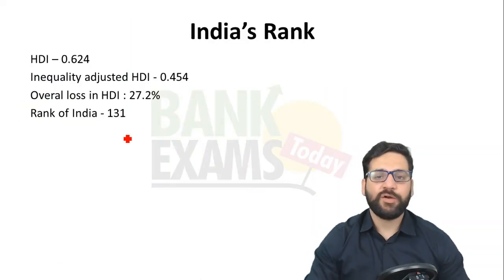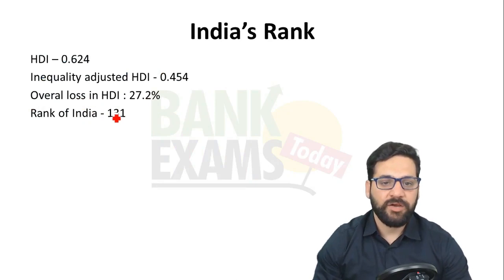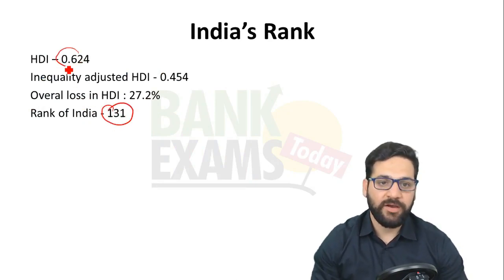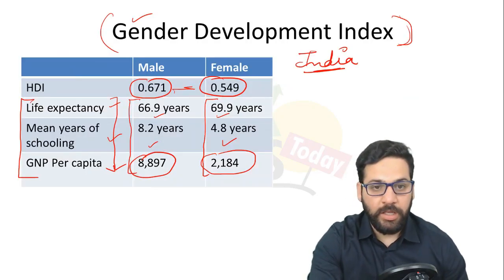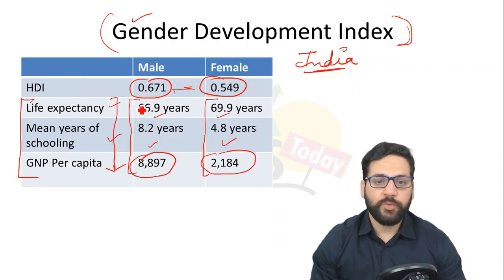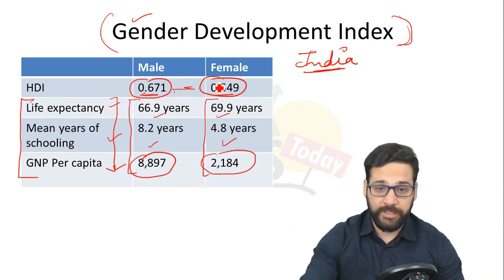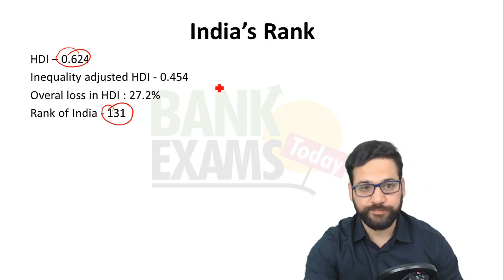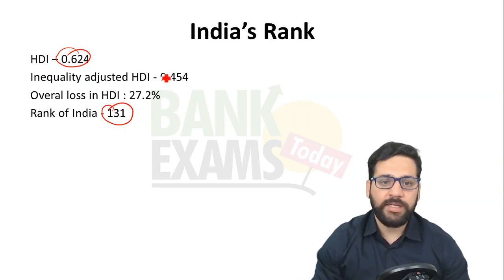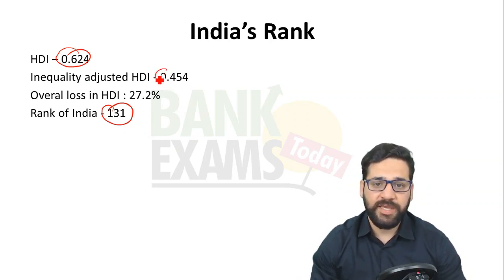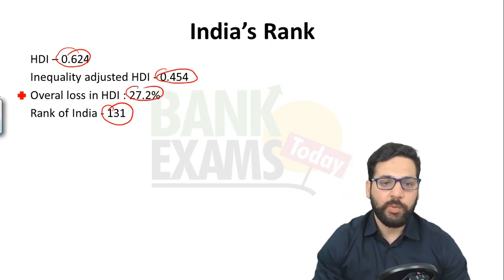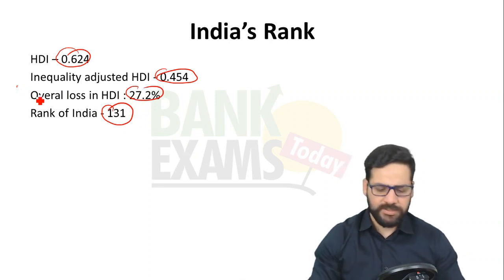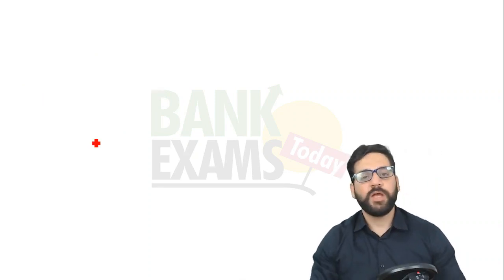India's rank is 131 with an HDI of 0.624 — 0.671 for males and 0.549 for females. The Inequality-Adjusted HDI is 0.454, and the overall loss in HDI due to inequality is 27.2 percent.